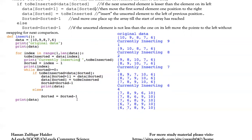The final line printed here is the result of a print statement outside all the loops — it is not part of any iteration. It simply prints the final sorted result after the entire algorithm has completed.